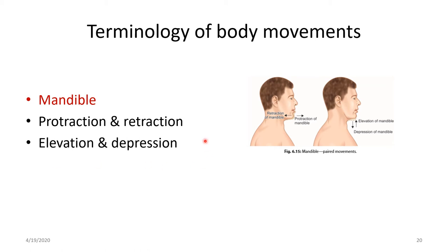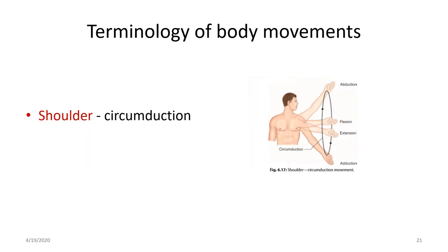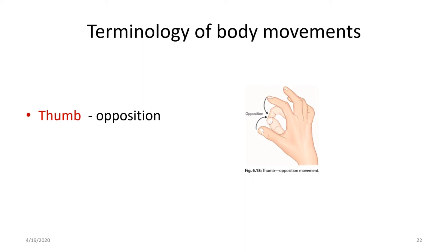Let us see the terminology of movements for the mandible or chin. They are protraction — forward movement — and retraction — going back to anatomical position. Bringing it down is depression, and bringing it back to anatomical position is elevation. The movement of circumduction at the shoulder passes through the three axes, involving abduction, flexion, extension, and adduction. Another movement of the thumb is opposition — the thumb coming in contact with the tips of the other fingers.